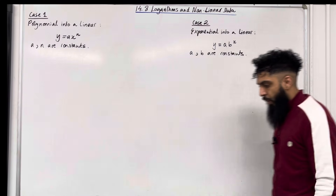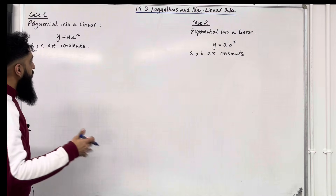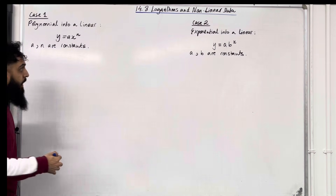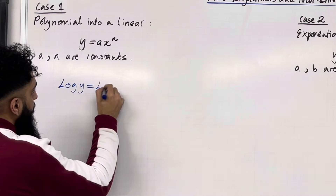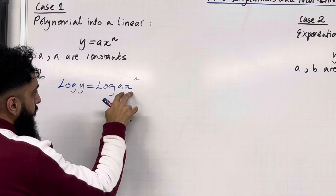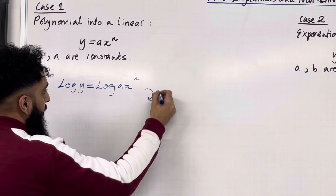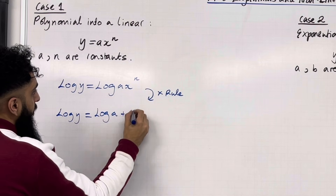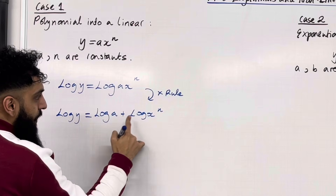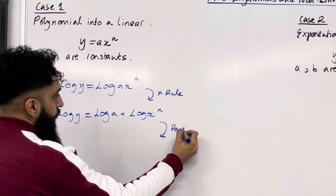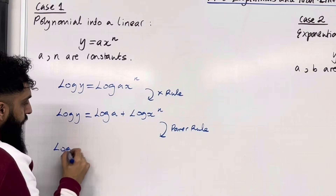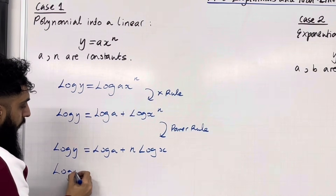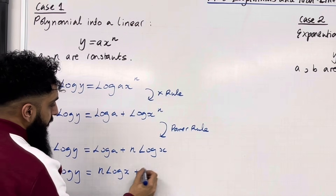Let's look at case number 1. We've got y equal ax to the power n, where a and n are constants. To transform this into a linear, I apply logs on both sides: log y equals log(ax to the power n). Using the multiplication rule for logs, I split this: log y equals log a plus log(x to the power n). Then I bring down the power using the power rule: log y equals log a plus n log x.